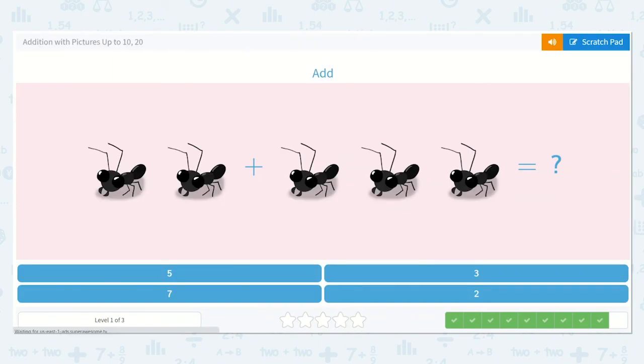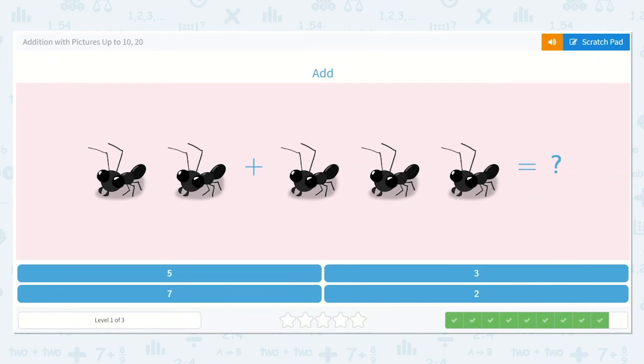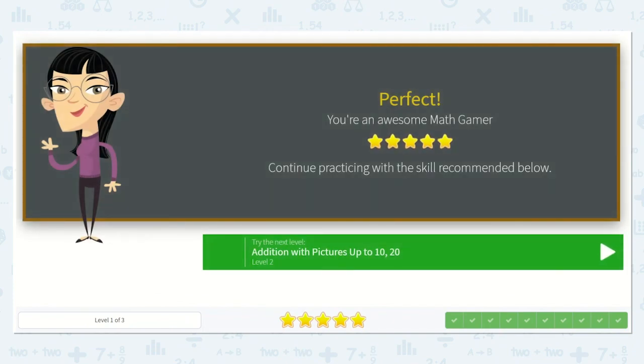This is our last problem. We have 1, 2 ants plus 1, 2, 3 ants. That is equal to, let's see, 1, 2, 3, 4, 5 ants total. So 2 plus 3 is equal to 5. Here's the 5. You did an amazing job today.